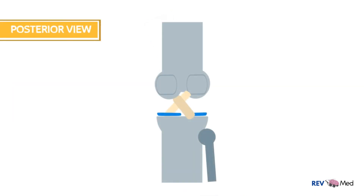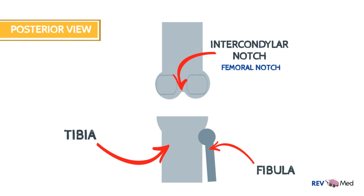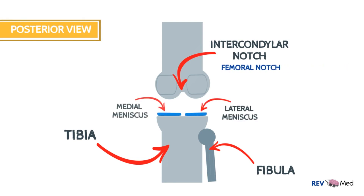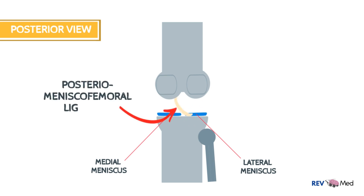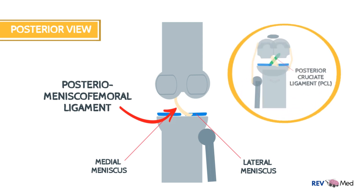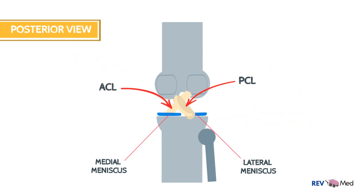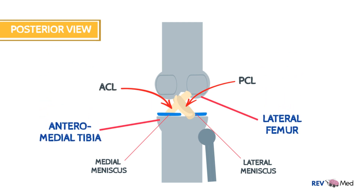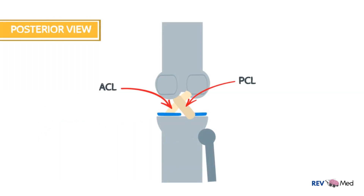Looking from the back, we can draw the tibia, fibula, and the intercondylar notch — otherwise known as the femoral notch. The lateral and medial menisci help orient the structures. From the posterior part of the lateral meniscus we have the posterior meniscofemoral ligament, which has a secondary effect on the posterior cruciate ligament. The PCL travels from the medial femur to the posterior lateral part of the tibia, while the ACL comes from the lateral part of the femur and travels anteromedially to the tibia.